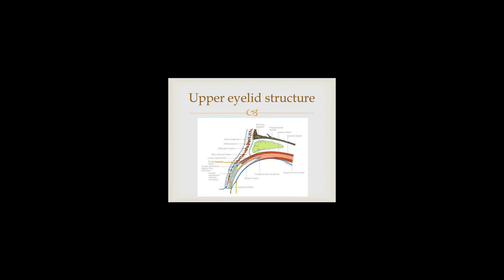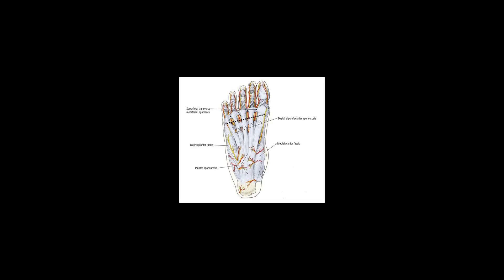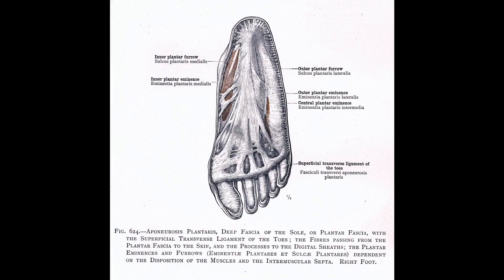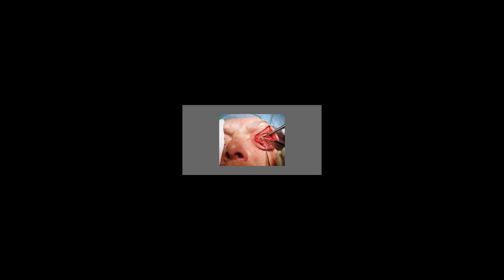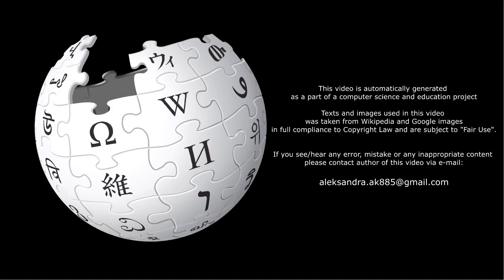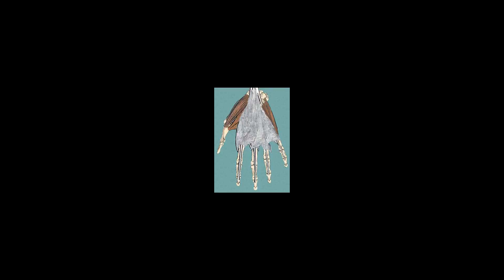Palmar and plantar aponeurosis and extensor hood. The palmar aponeurosis occur on the palms of the hands. The extensor hoods are aponeuroses at the back of the fingers. The plantar aponeurosis occur on the plantar aspect of the foot; they extend from the calcaneal tuberosity, then diverge to connect to the bones, ligaments, and the dermis of the skin around the distal part of the metatarsal bones.